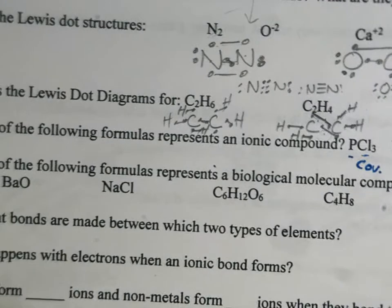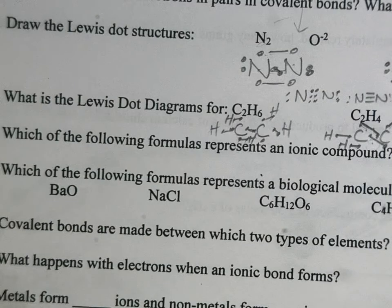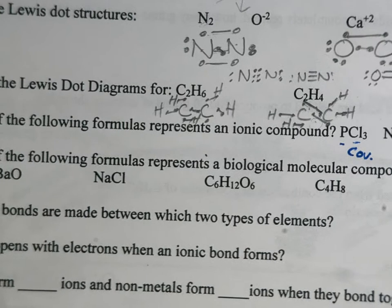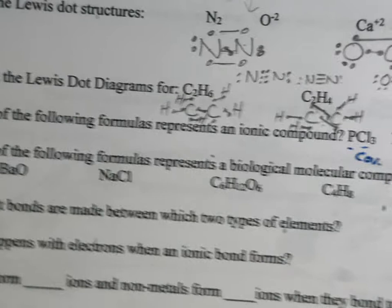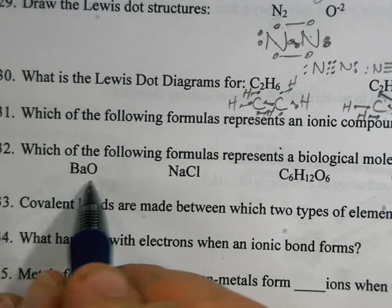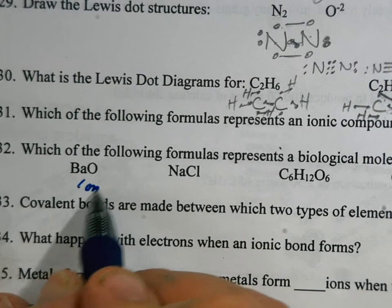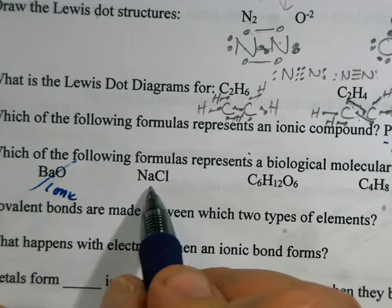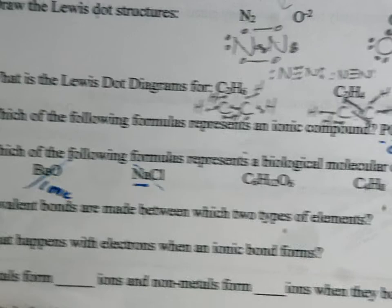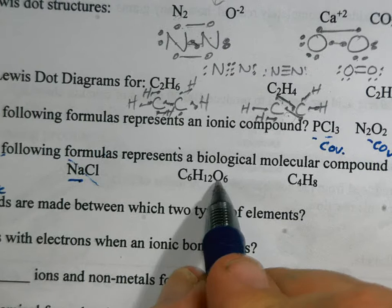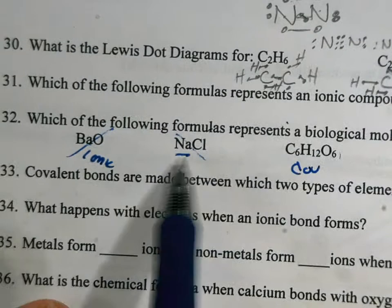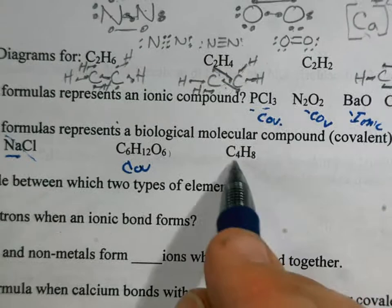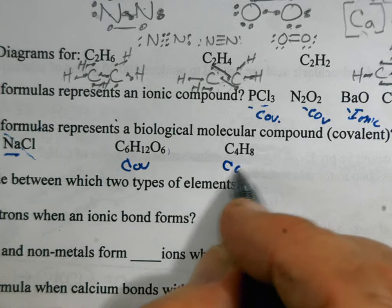Which of the following formulas represents biological molecular compounds? So we're really asking which is covalent. That was number 32. So you've just got to have all non-metals. Barium oxide? Nope. We just said that was ionic. Sodium chloride? That's a metal. Sodium's a metal? No. So carbon, hydrogen, and oxygen? Yeah, that's covalent. Or a molecular compound, because technically these are not molecules. You can call them a formula unit. And over here, two non-metals, so that's covalent.